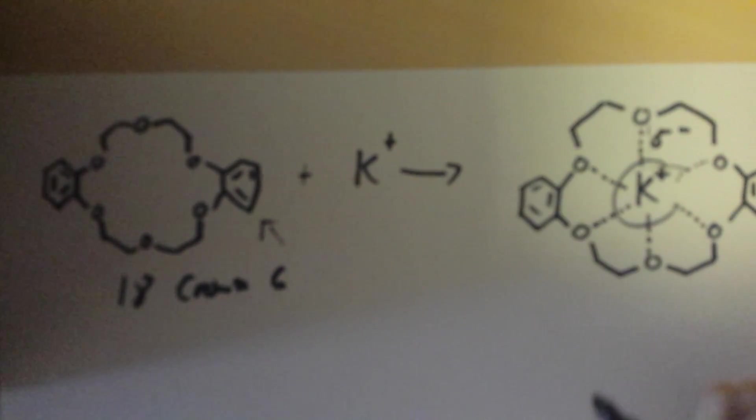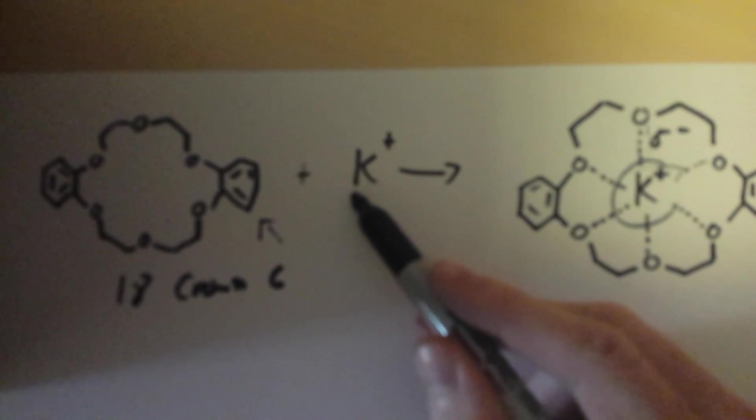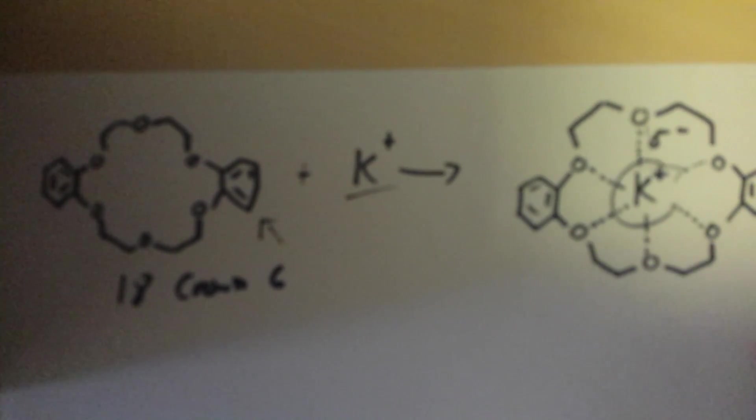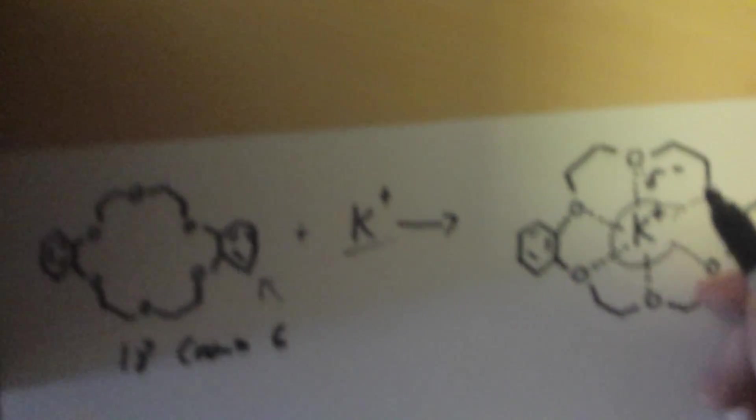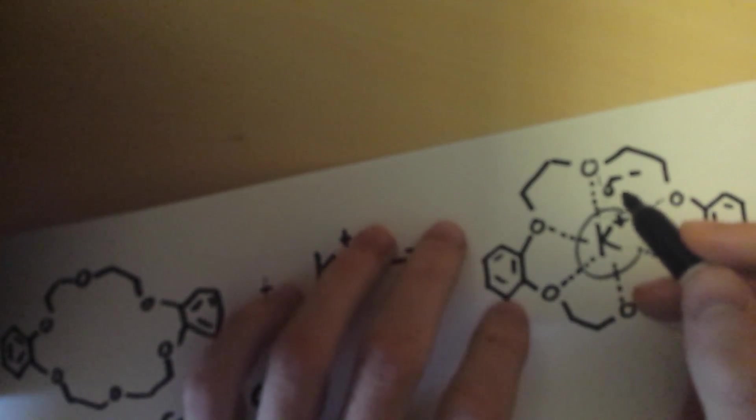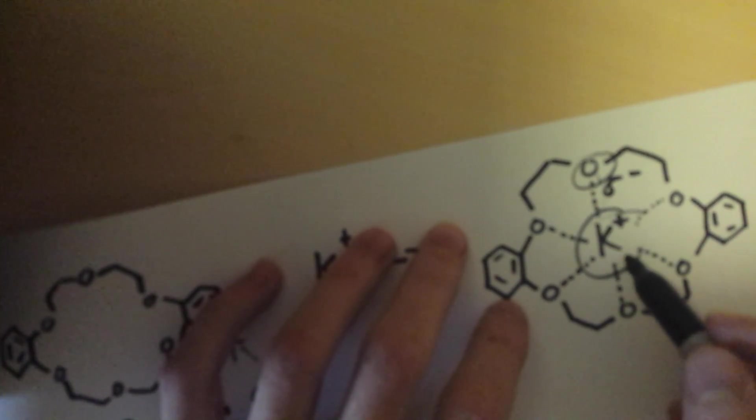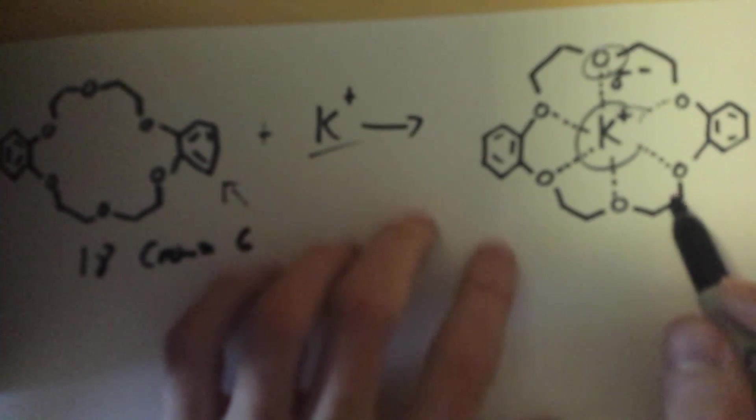Now, crown ethers are really good at dissolving cations like sodium, potassium, and lithium. They're able to do this because the oxygen right here has a partial negative charge, and the cation has a partial positive charge.